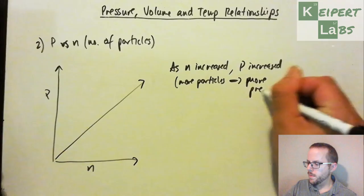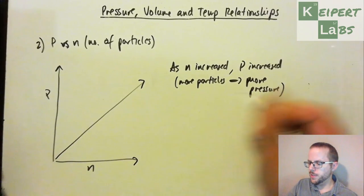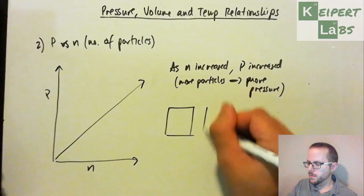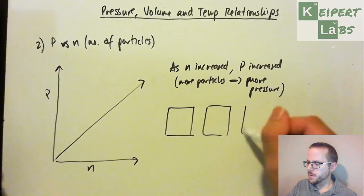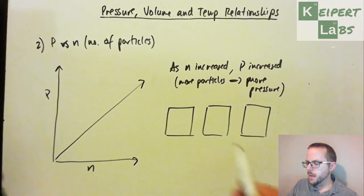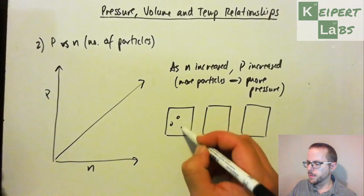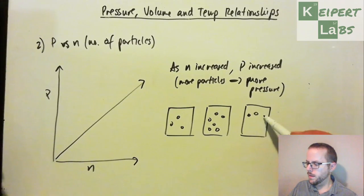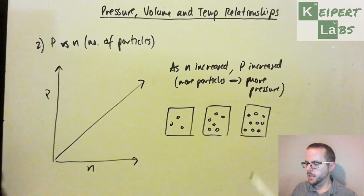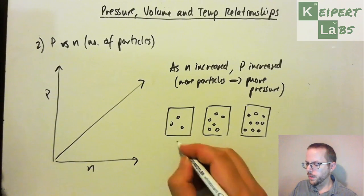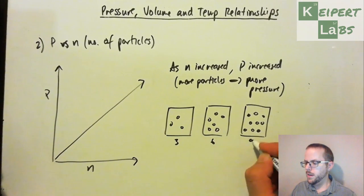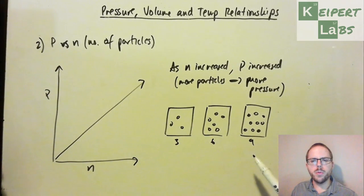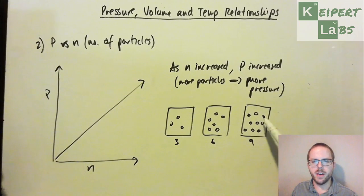Which is fairly intuitive for us to understand, because if we have three boxes of the same volume, the same size, and say we've got three particles in here, and we've got six particles in here, and we've got nine particles in here. We can see that we're going to get more and more collisions of particles with the box, as we add more particles into the same size.